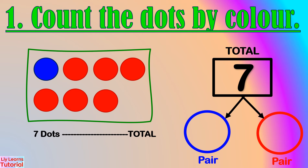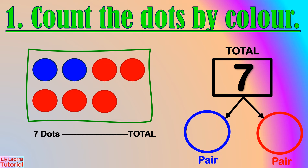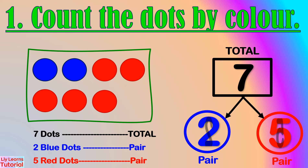It's given that we have 7 dots. Now, we count the dots by color. There is one blue dot and 6 red dots — the number pair is 1 and 6. Here, there are 2 blue dots and 5 red dots — the number pair is 2 and 5.